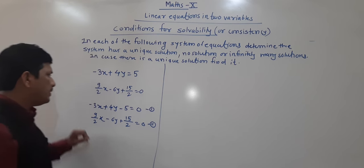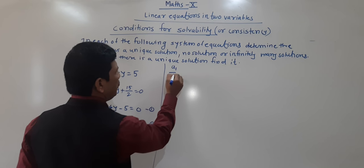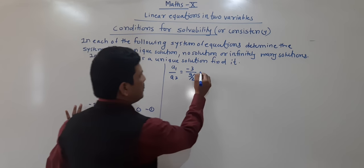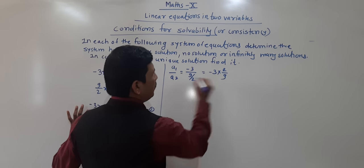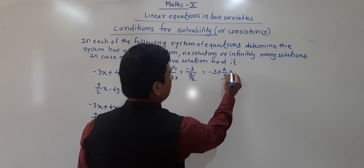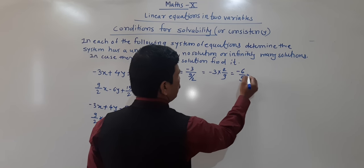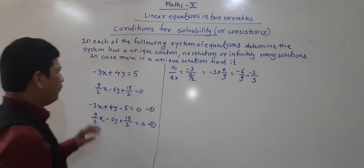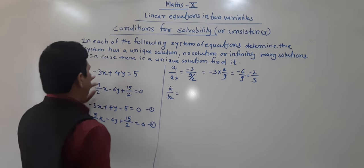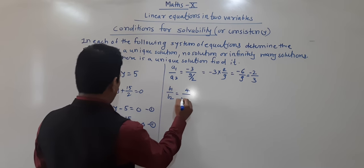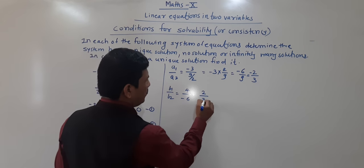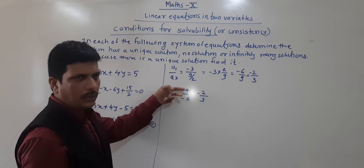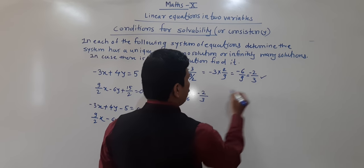We find the ratios. a1/a2 = −3 ÷ (9/2) = −3 × (2/9) = −6/9 = −2/3. Now b1/b2 = 4 ÷ (−6) = −4/6 = −2/3. So a1/a2 = b1/b2 = −2/3. Since these are equal, we need to find the third ratio as well.